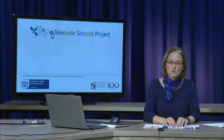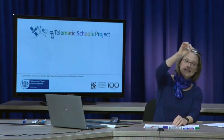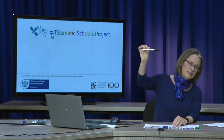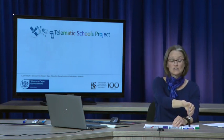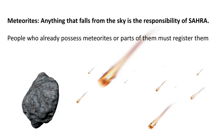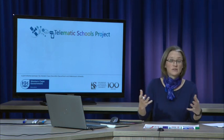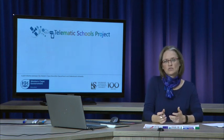Meteorites are also protected. A meteor flies through space and burns up before hitting Earth's surface, but a meteorite actually lands and you can touch it. Any rock that falls from outer space is the responsibility of SAHRA, and people who already have meteorites must register them because they belong to our national heritage and give us information about the past.